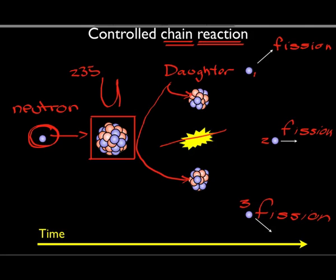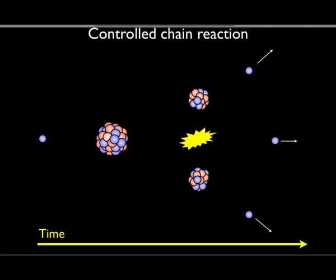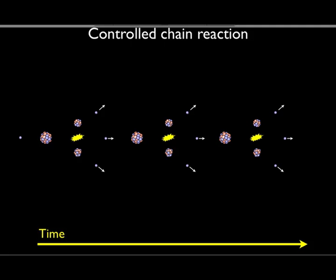Now, in order for a chain reaction to be controlled in a nuclear power station, we need to do something about these neutrons. So let's have a little look at a controlled chain reaction. And just as before, as we move from left to right on this screen, time goes on this way.